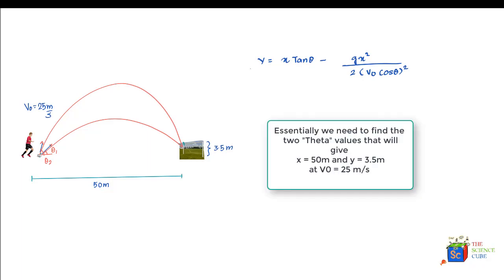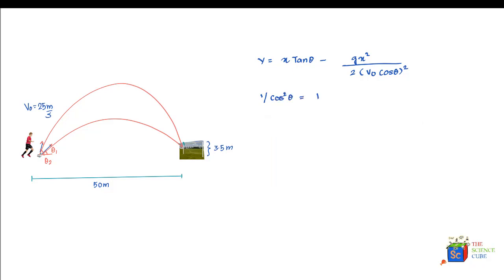Y and x are coordinates at any point in time, and theta is the angle of projection. There's a mathematical identity that says 1 upon cos squared theta equals 1 plus tan squared theta.